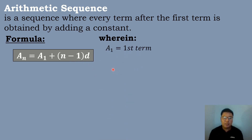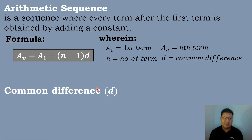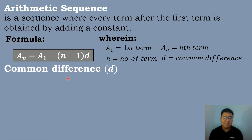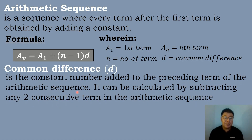Wherein a sub 1 is equal to the value of the first term, n is equal to the number of terms, a sub n is the nth term, and d is equal to the value of the common difference. The common difference, denoted as d, is the constant number added to the preceding term of the arithmetic sequence.